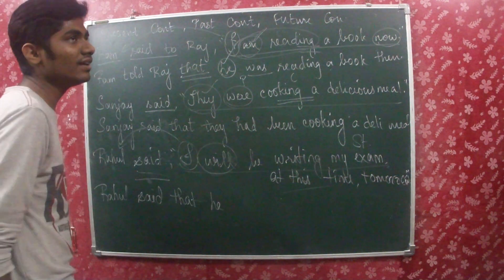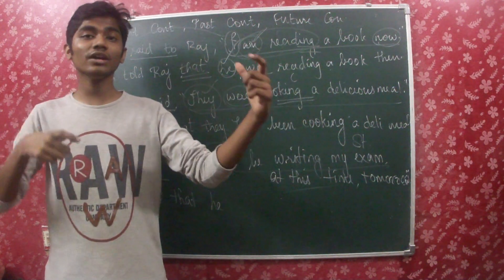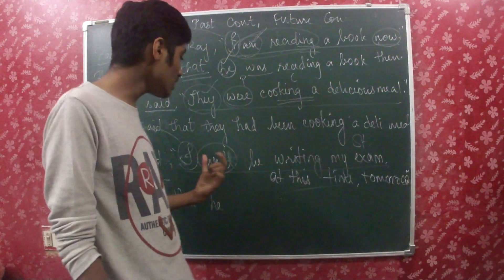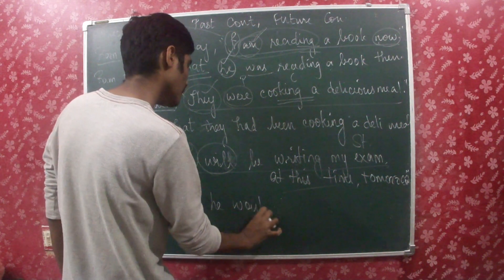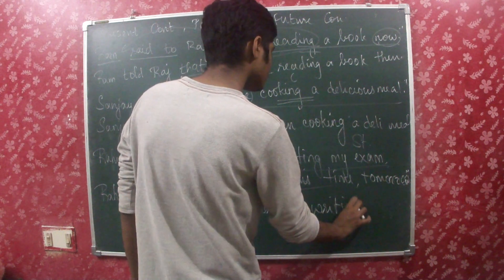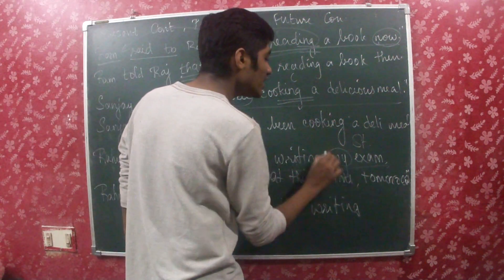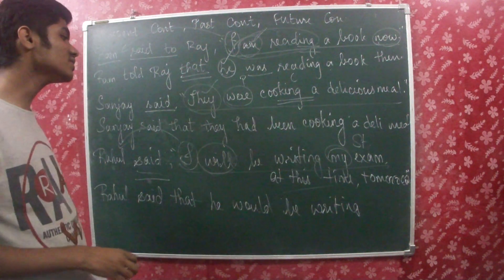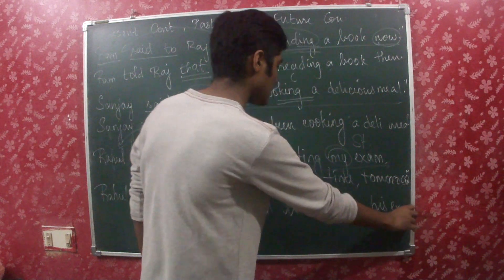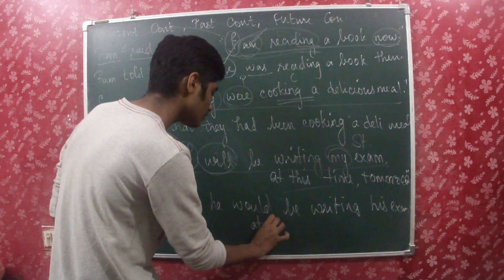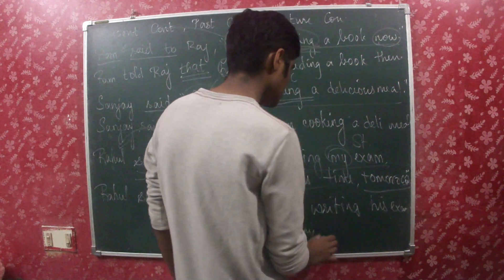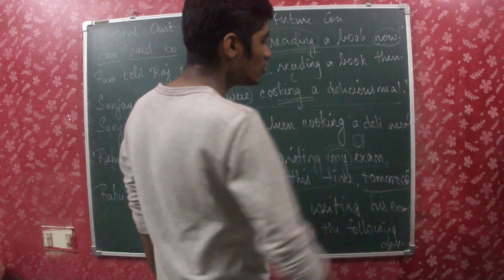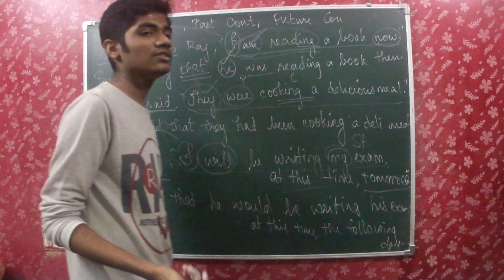Modal verbs in direct speech get converted into their past forms in indirect speech. The modal verbs are: can, could, may, might, shall, should, will, would, ought to, need to, dare to, and must. Here we have 'will', so it changes into 'would'. He would be writing — and 'my exam' changes to 'his exam' since 'my' refers back to Rahul. Also, 'tomorrow' changes into 'the following day'. So: Rahul said that he would be writing his exam at this time the following day. As 'now' changes into 'then', and 'yesterday' changes into 'the day before' or 'the previous day'.